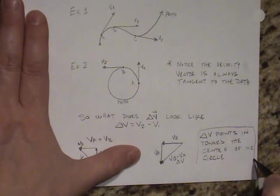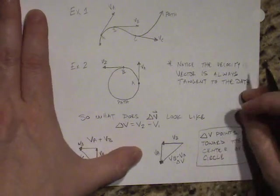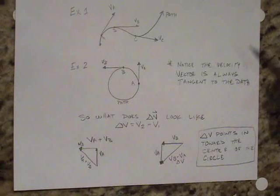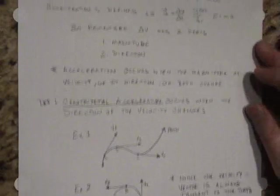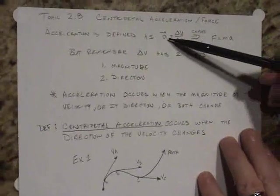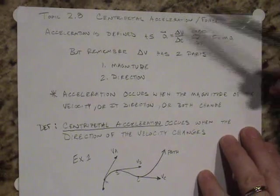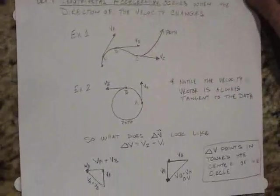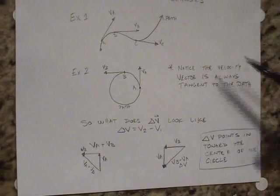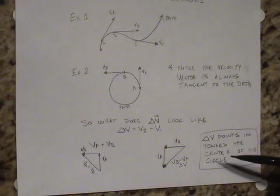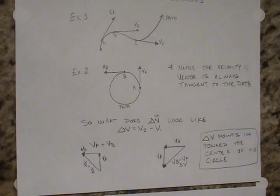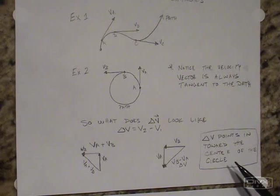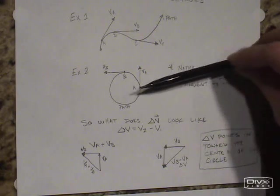So delta V points in towards the center of the circle. Very important piece of information. Now the change in time is not going to affect the direction. So the direction of centripetal acceleration, the direction of this acceleration, is based on the direction of the change in V. And in this case, we found that the change in V always points towards the center of the circle.